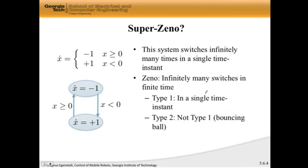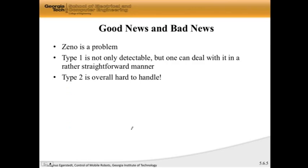So, for that reason, we typically talk about two different kinds of Zeno types. So type 1 Zeno, which is what I now call the super Zeno, it says that you get infinitely many switches in a single time instant. In this case, again, I want to reiterate this, the ball came down here and then, not the ball, this system came down here and then it started switching infinitely many times right there. Now, type 2 is Zeno but not type 1, meaning you have infinitely many switches but you have that over a time interval. And the bouncing ball is really an example of that.